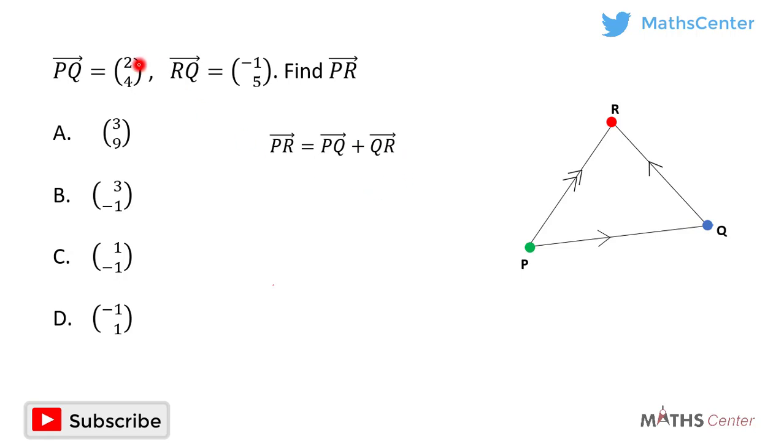So the vector PR is equal to the vector PQ plus the vector QR. From the question, we have been given the vector PQ and the vector RQ.